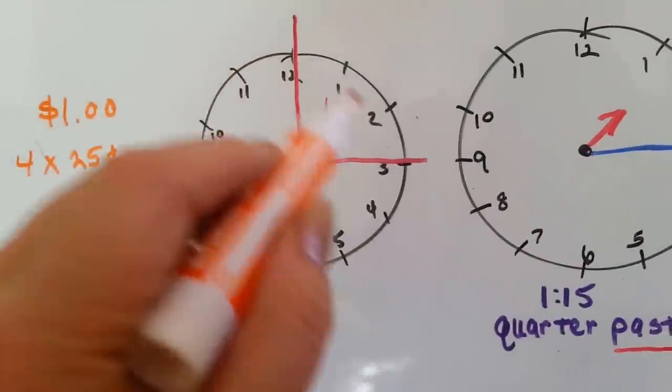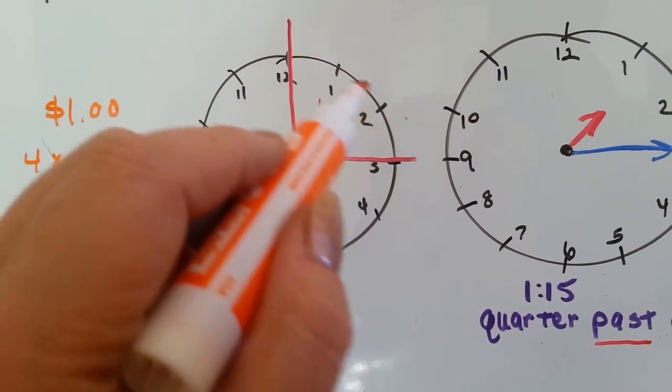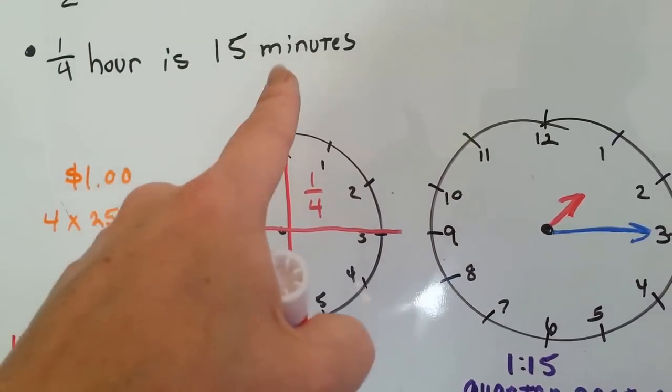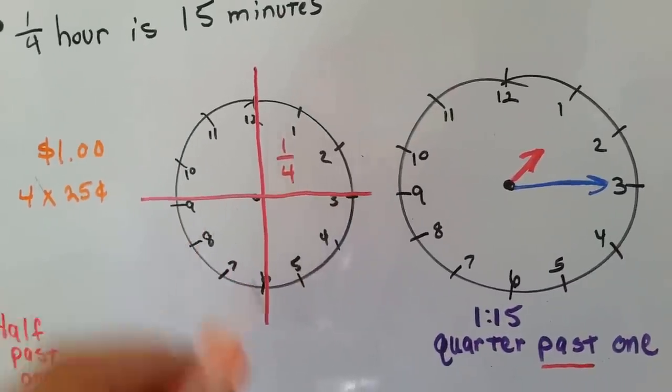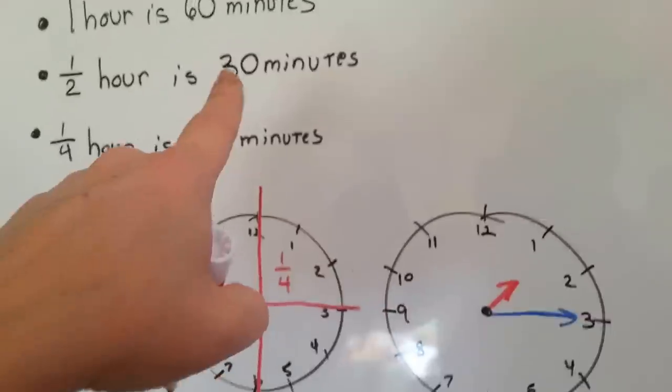So one quarter, when we count by fives, is 5, 10, 15 minutes. Each quarter has 15 minutes inside of it, and then it adds up to the 60.